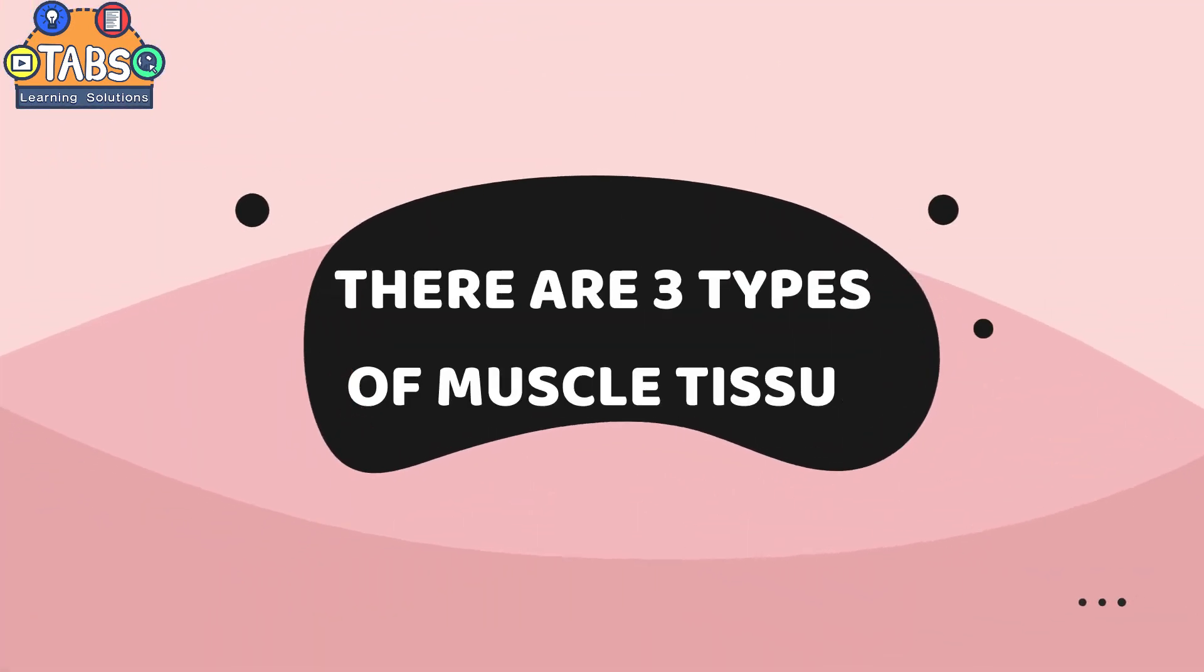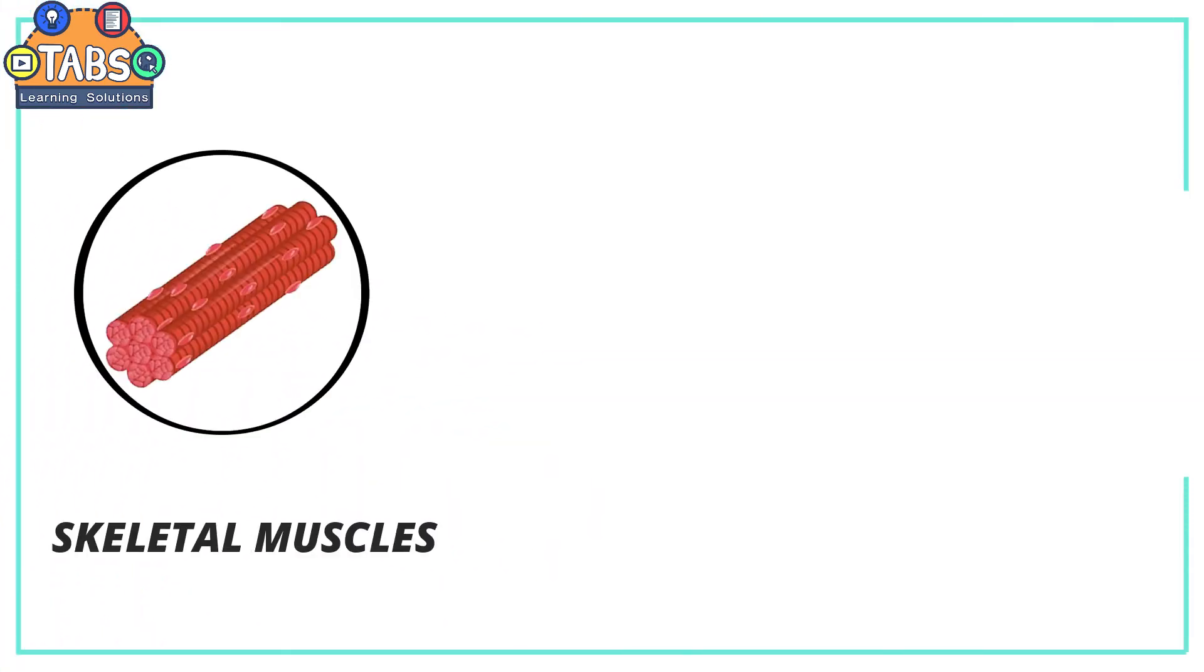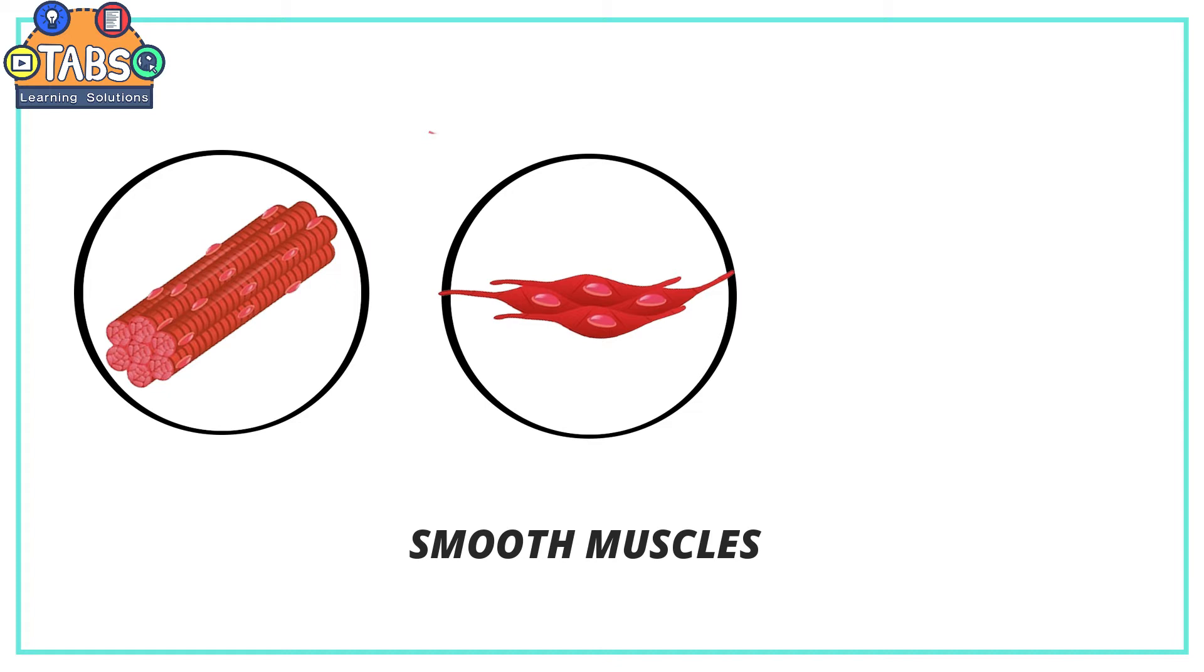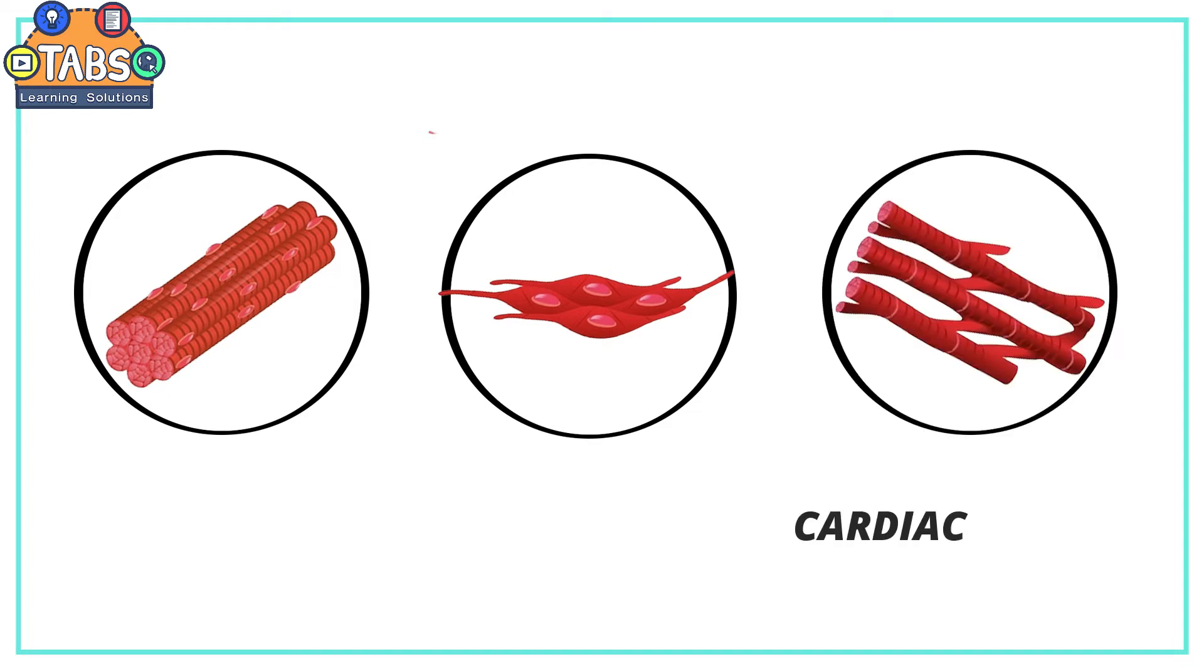There are three types of muscle tissue: the skeletal muscles, smooth muscles, and the cardiac muscles.